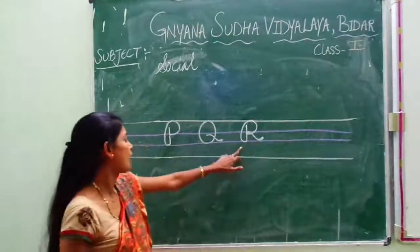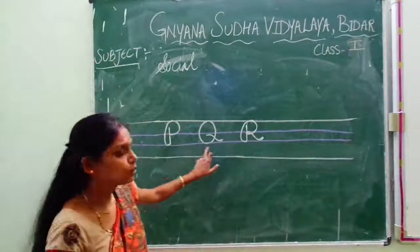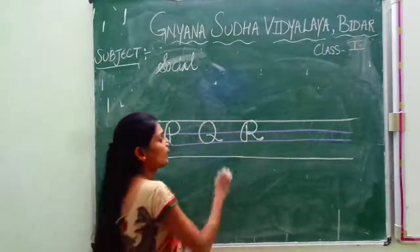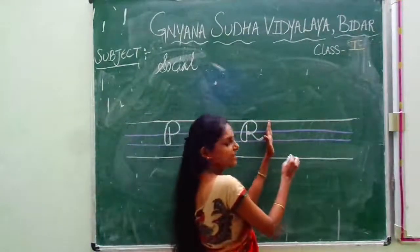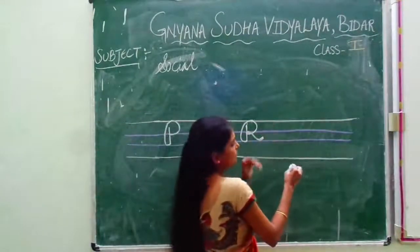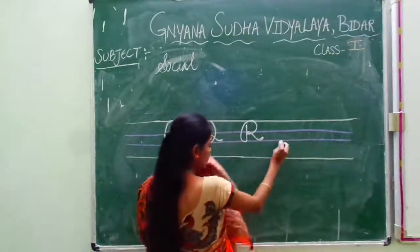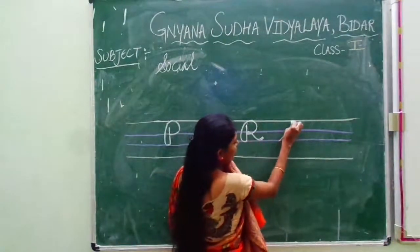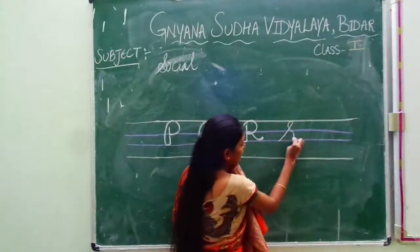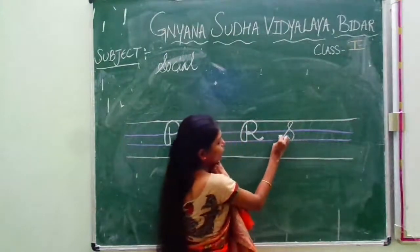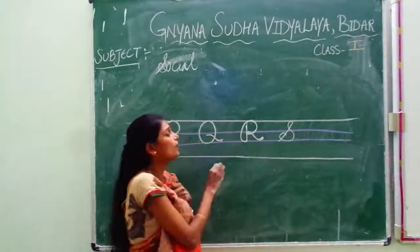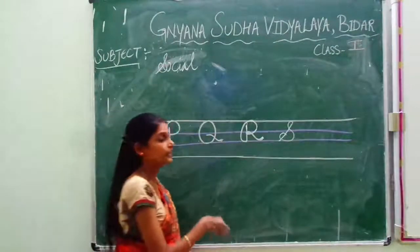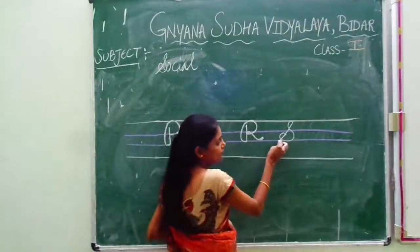What is this called? R. So P, Q, R. Now again after R leave some space and write S. I will show you how to write S. See here — one slanting line, one curve like this, like this. This is called capital cursive S. What is this called?